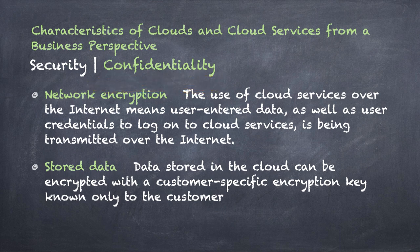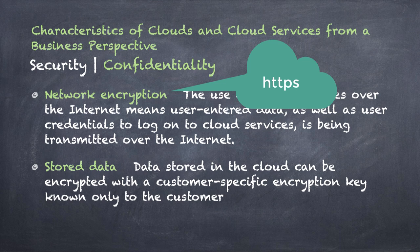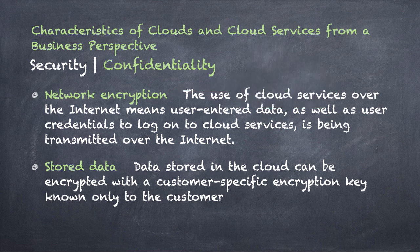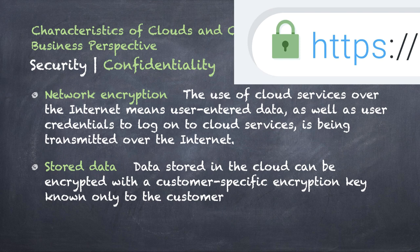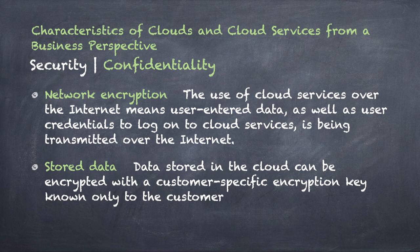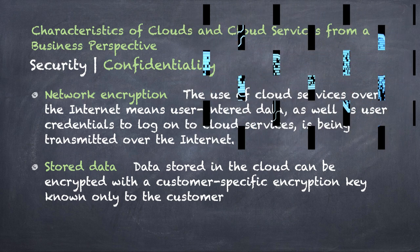Confidentiality is a type of security, and in the cloud it means encryption. Encryption takes one or two forms: we encrypt things when they're moving across a wire — called network encryption. The predominant protocol in the cloud world is HTTPS, or secure web — what your bank and Facebook use, shown by the padlock icon in the URL. The other form is stored data encryption. Your data has to be stored somewhere in the cloud, so we also want to encrypt it there. Many cloud providers offer a customer-specific key that only you have and they don't.